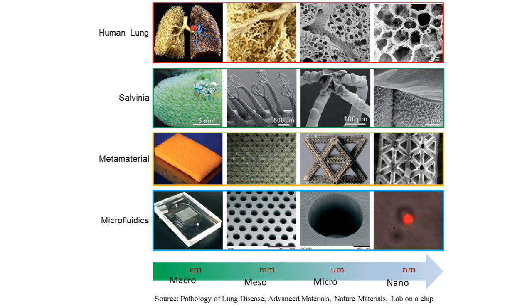Look around the world. Whether artificial objects, natural plants, or our human body, many structures spanning multiple scales exist. Such multi-scale structures have various attractive properties, like the superhydrophobic property of salvinia leaves.